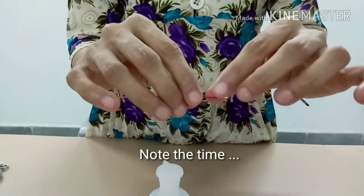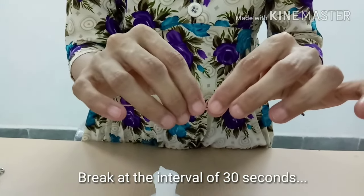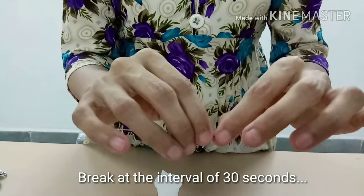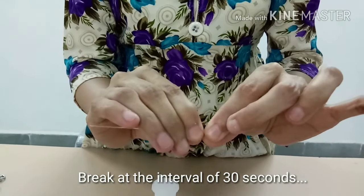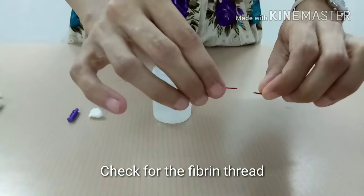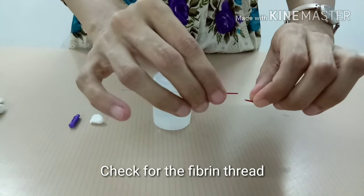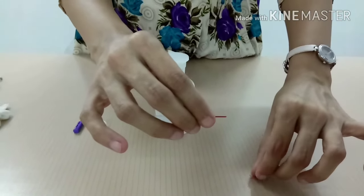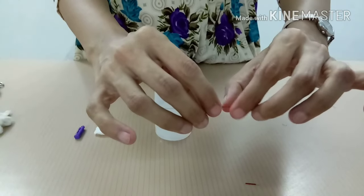Break about 1 mm of the capillary tube from one end after 30 seconds and check for the fibrin thread. If the fibrin thread is not seen, repeat the procedure at every 30 seconds till fibrin thread appears.